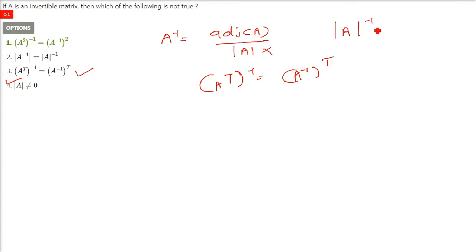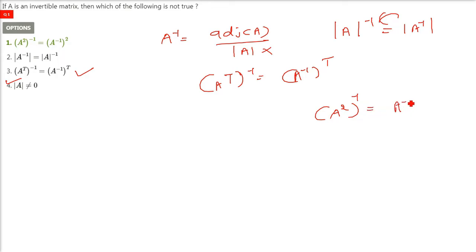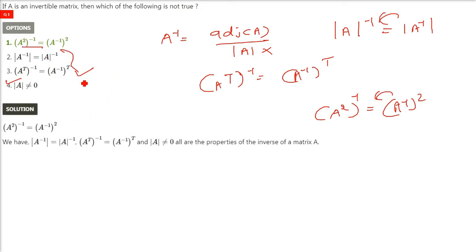Take the determinant then take the inverse, or take the inverse and take the determinant — they are both the same. We have already seen this in the properties. But we can never vouch for A squared inverse being equal to A inverse squared — it may be true, it may not be. So this is not a property. All the other three are actual properties we have already discussed. So the answer here is the first one.